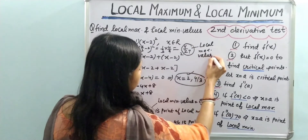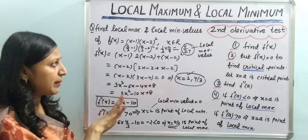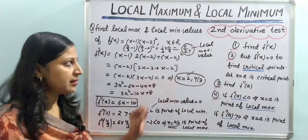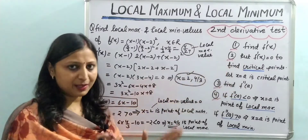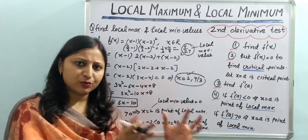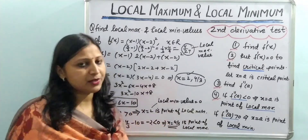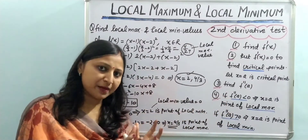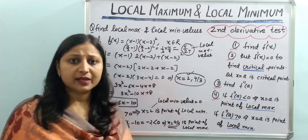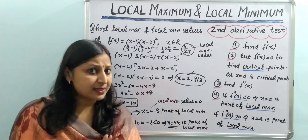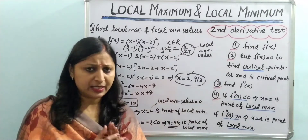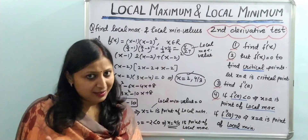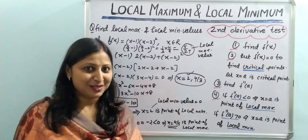So it is very simple. In this way, we can find local maximum and local minimum values of a given function with the help of the second derivative test. We just follow these four steps: find f'(x), set it to zero for critical points, find f''(x), and evaluate f'' at each critical point. However, there can be a situation where the second derivative value at that point is zero — let's see what happens in that case.